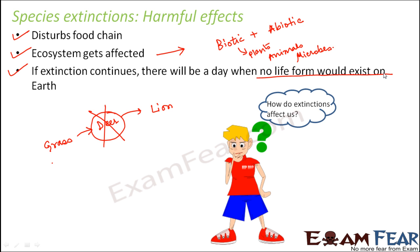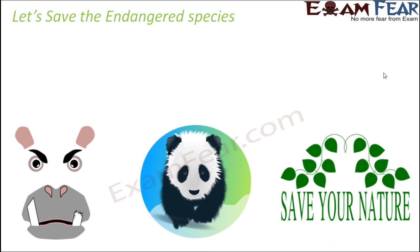All we can do is control extinction, because once they become extinct we cannot bring them back. If many species gradually become extinct, a day will come when all life forms vanish from earth. Many of us might think that if tigers become extinct it doesn't affect us, but tigers were playing a very important role in our ecosystem. Their extinction is an indirect message that someday even we might become extinct.